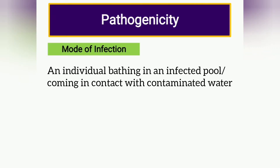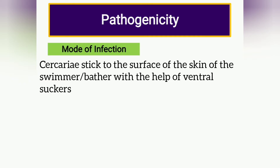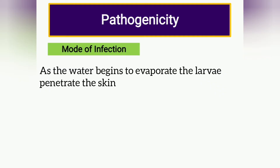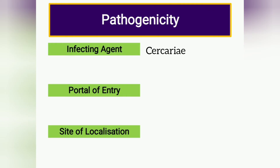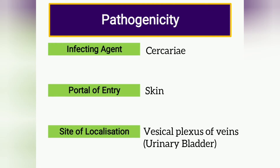Now I will discuss the pathogenicity of Schistosoma haematobium. Regarding the mode of infection: an individual bathing in an infected pool or coming into contact with contaminated water is liable to be infected. The cercaria stick to the surface of the swimmer's skin with the help of ventral suckers. As the water begins to evaporate, the larvae penetrate the skin. The infecting agent is cercaria, the portal of entry is the skin, and the site of localization is the vesical plexus of veins in the urinary bladder.